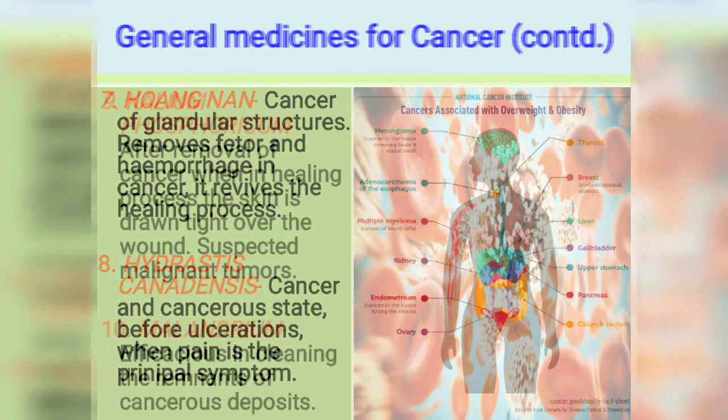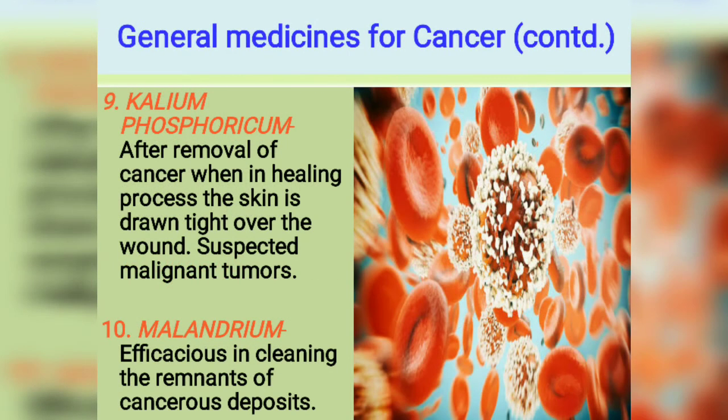Next is Calcarea Phosphorica — after removal of cancer, when in the healing process the skin is drawn tight over the wound, and also for suspected malignant tumors. So two conditions: after surgery when there is tightness, use Calcarea Phosphorica; and second, if there are suspected malignant tumors.